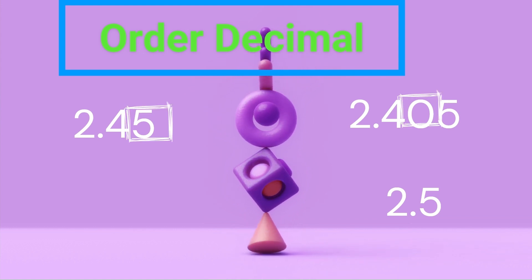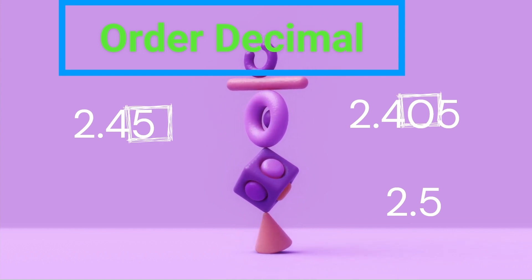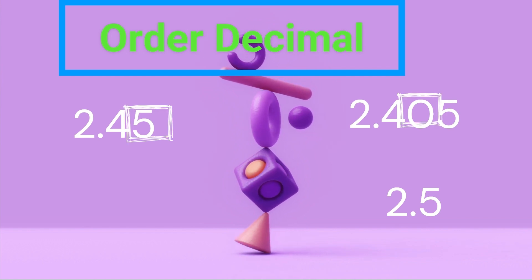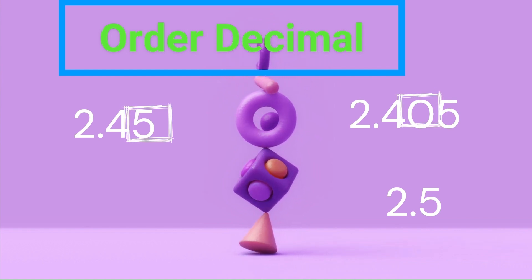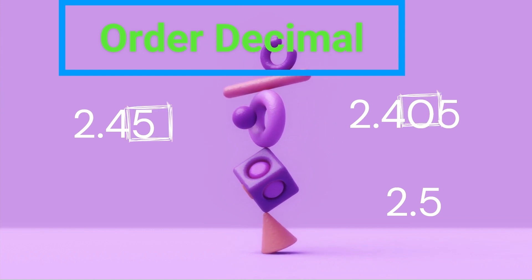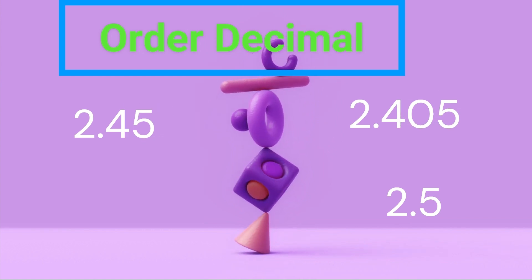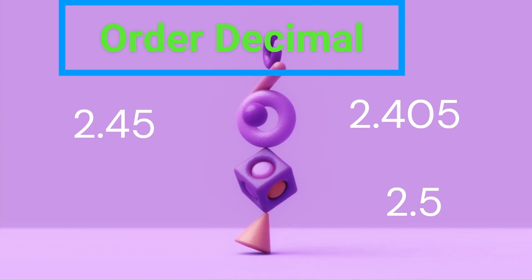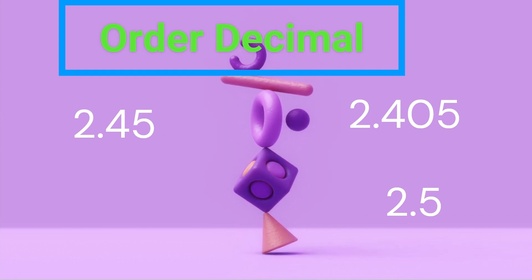Step 3: Compare the hundredths digits. 2.45 has a hundredths digit of 5. 2.405 has a hundredths digit of 0. Since 0 is less than 5, 2.405 is smaller than 2.45.